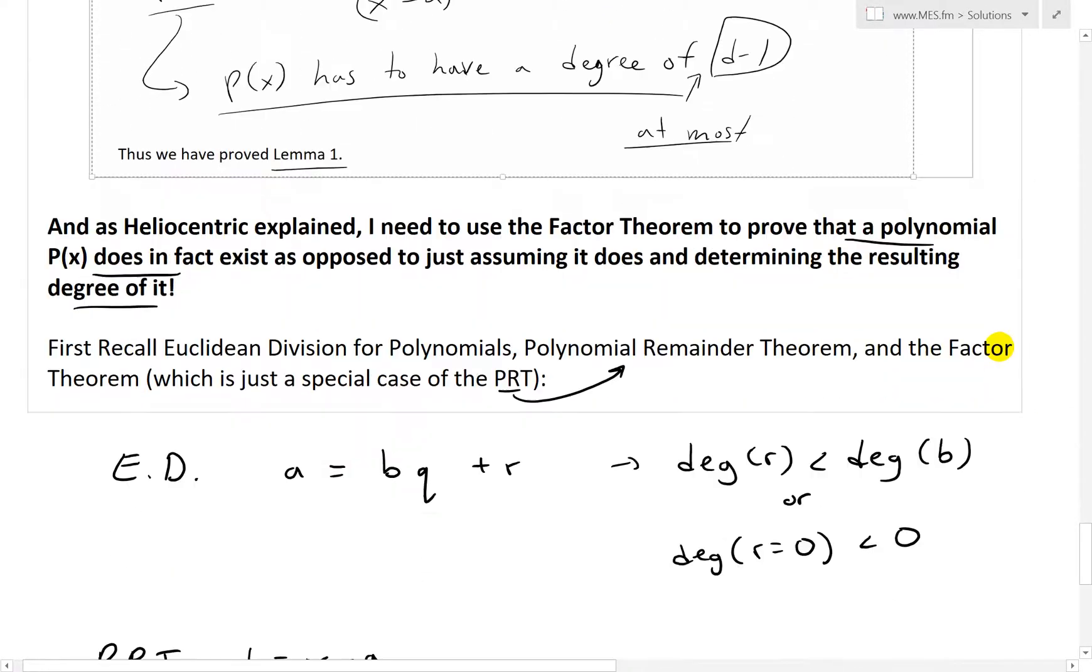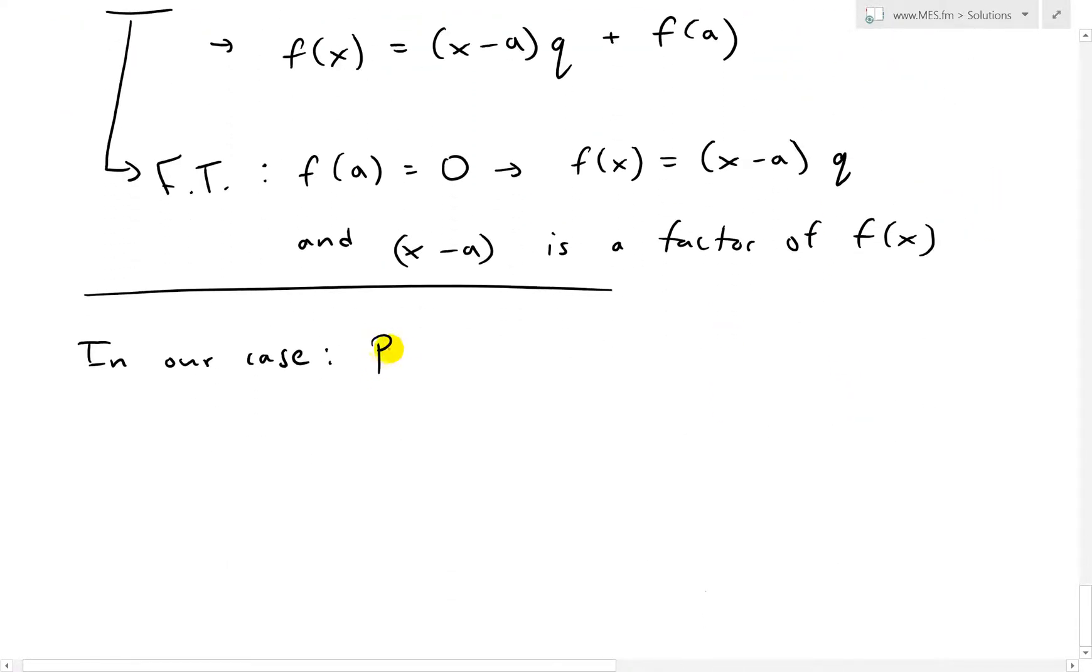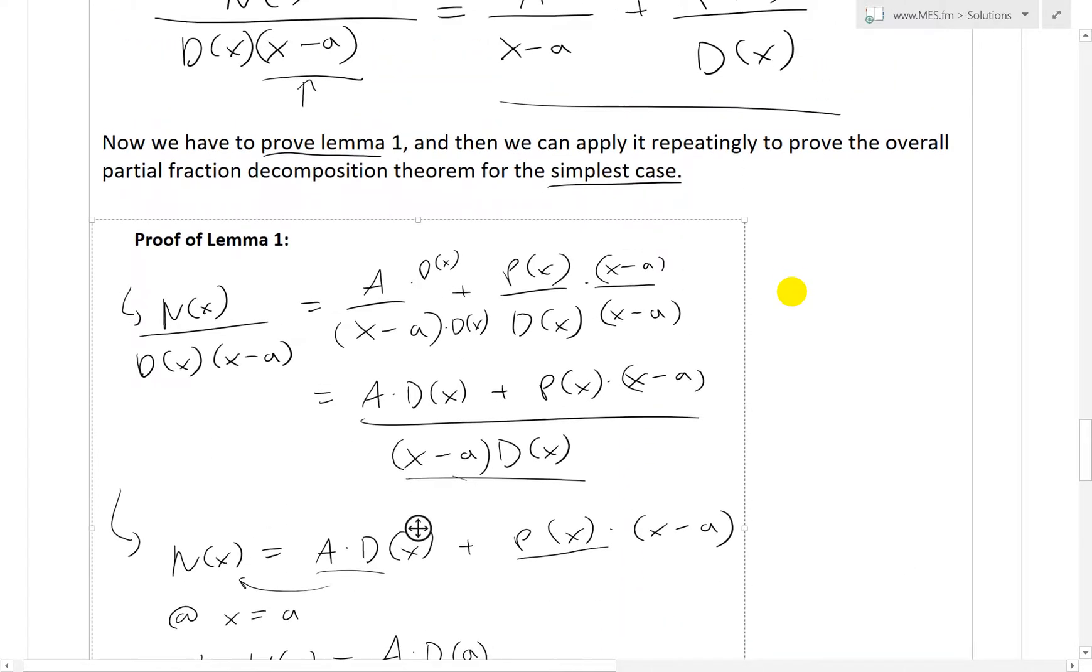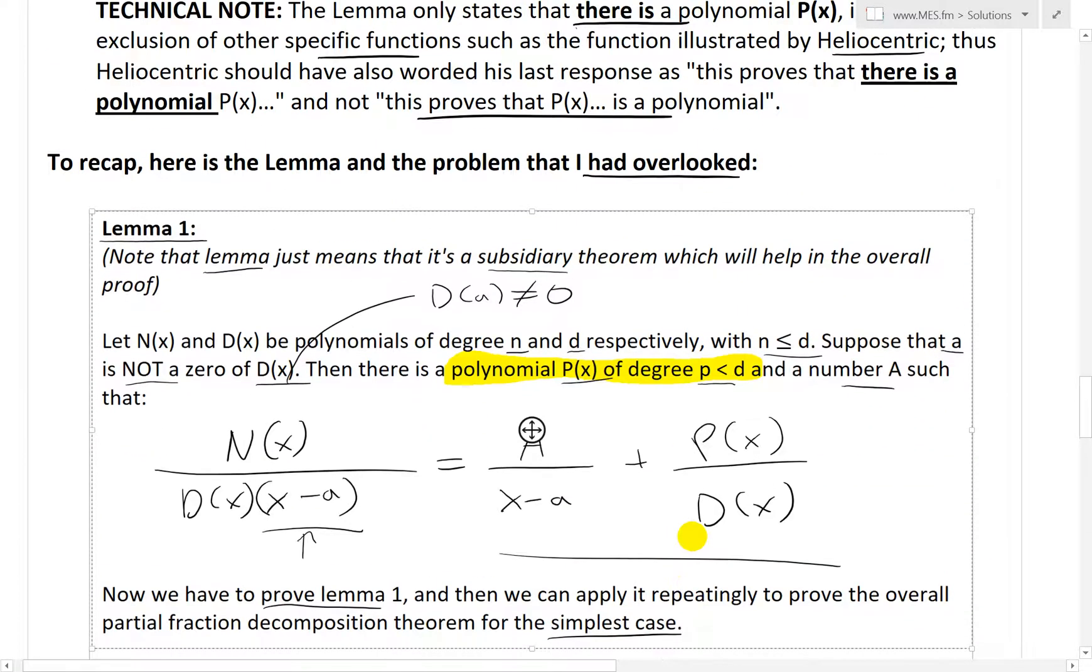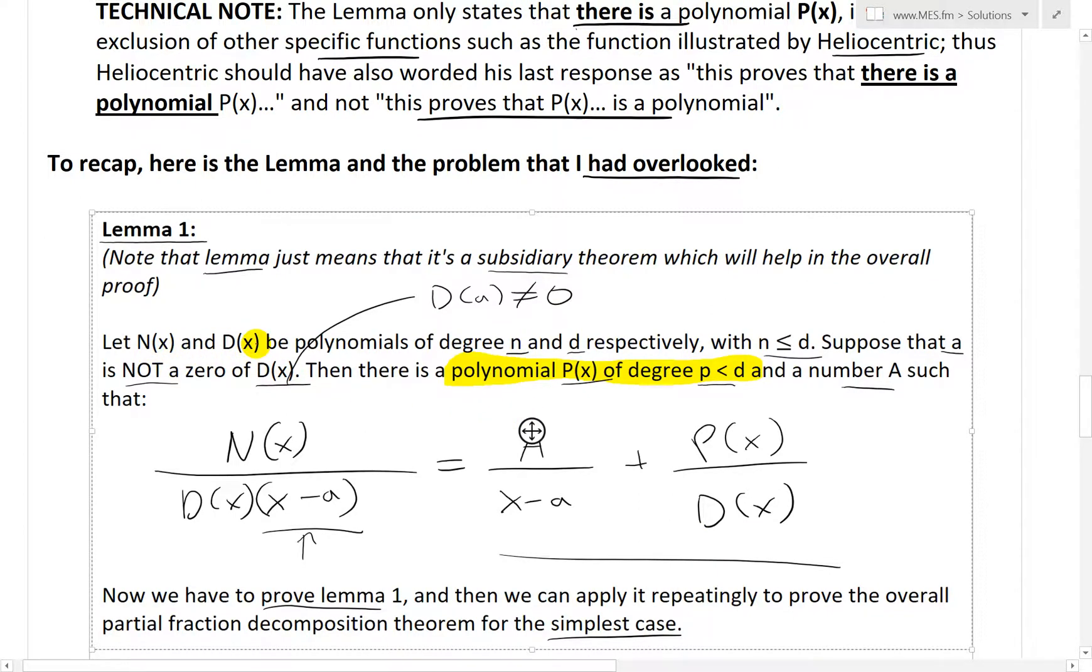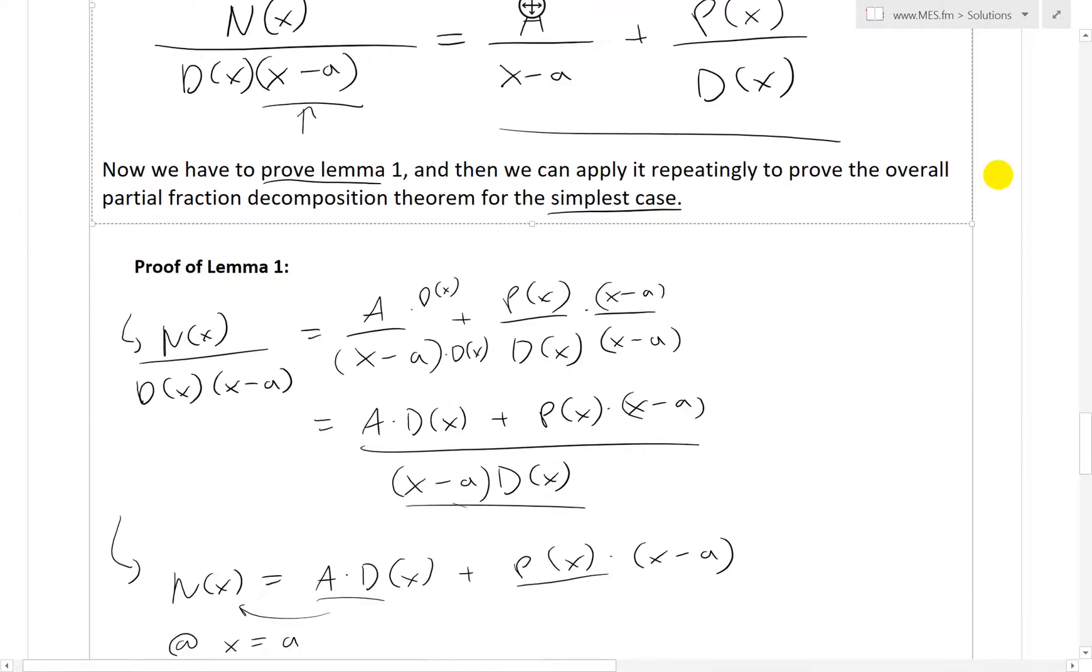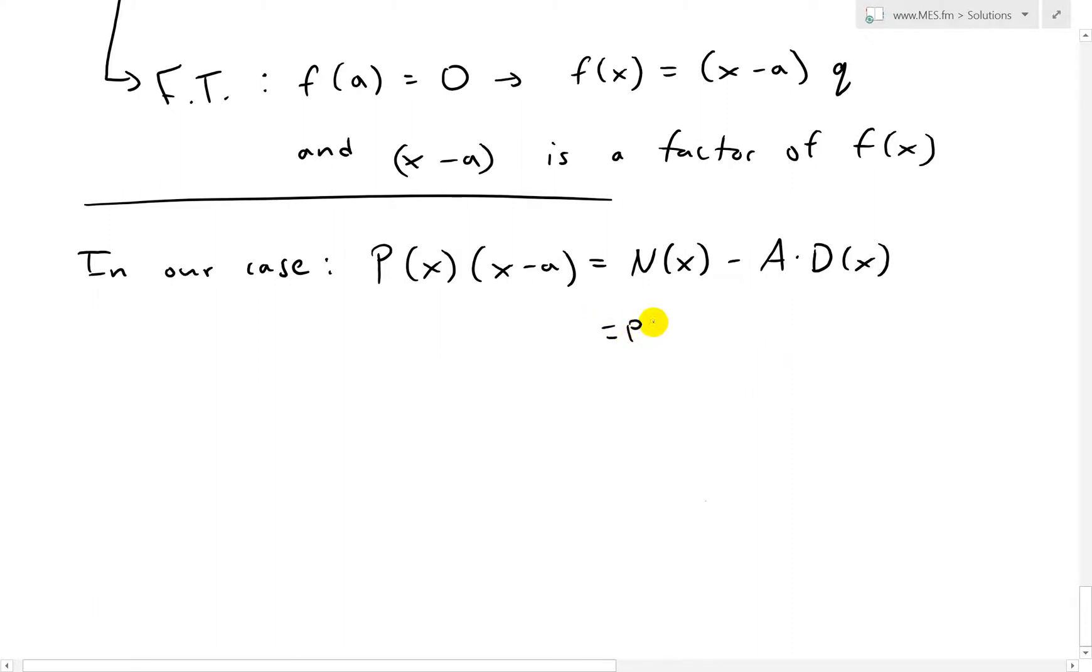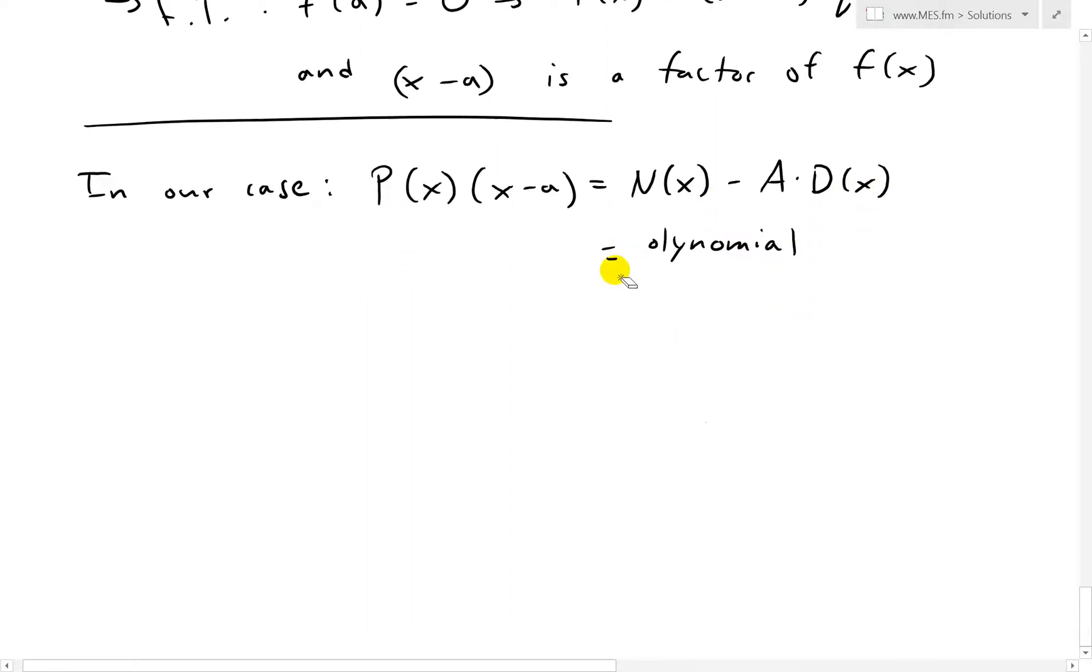So let's just write that point down. I had P(x) times (X-A) equals N(x) - A times D(x). Remember in that same lemma, N(x) and D(x) are polynomials. So when you subtract and A is just a number, you're just going to get a polynomial nonetheless. So this equals a polynomial. The left side and right side are both polynomials. We need to prove if this one is.